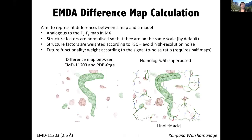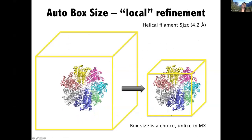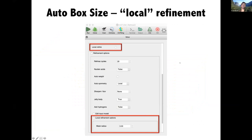To analyse this further, we can look at difference maps, which represent differences between a map and a model — analogous to the Fo-Fc map in MX. Structure factors are normalised to the same scale by default and are weighted according to the FSC to avoid high-resolution noise. Here, the difference map shows a blob in the difference density, and superposing the homologue shows it corresponds nicely to the linoleic acid. It's also worth considering the automatic box size for local refinement — if the box is much bigger than your molecule, it will automatically cut down. This is available with one tick in the CCPEM interface.